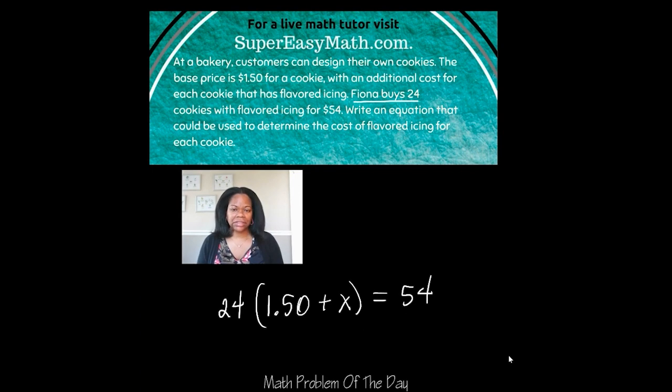So at the last sentence where the question asks, write an equation that could be used to determine the cost of flavored icing for each cookie, you would write 1.50 plus X. And then that needs to be multiplied by 24 and the 24 could come in front of that grouping or after either way is fine. And then all of that needs to equal 54 guys.